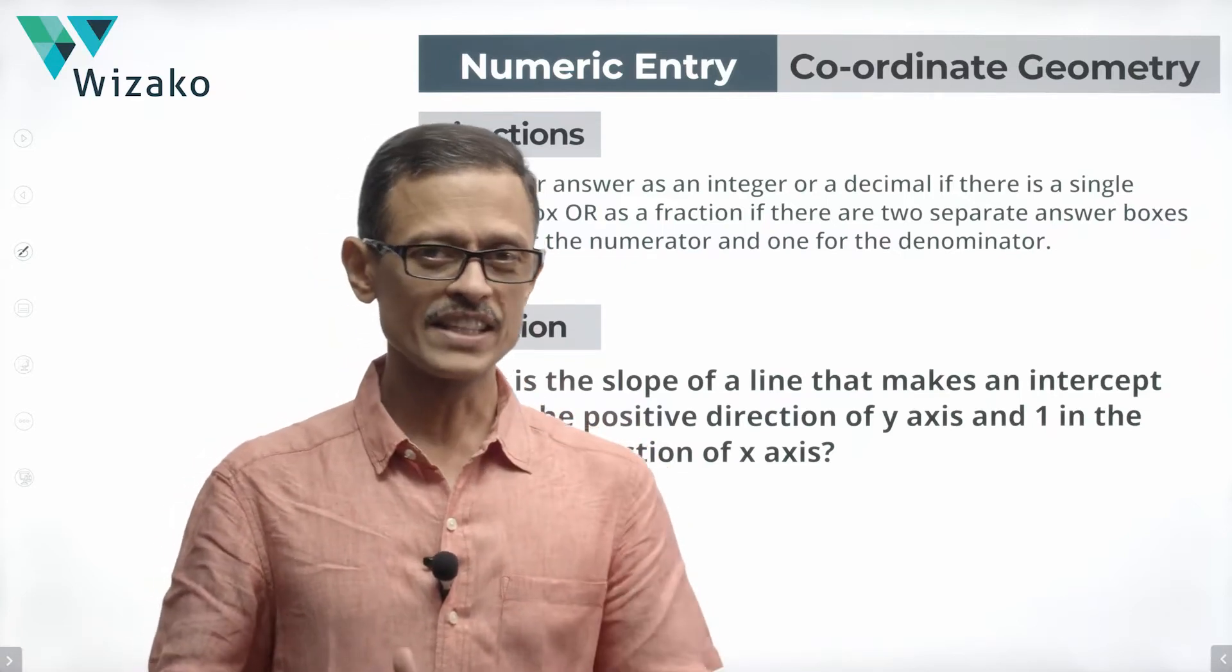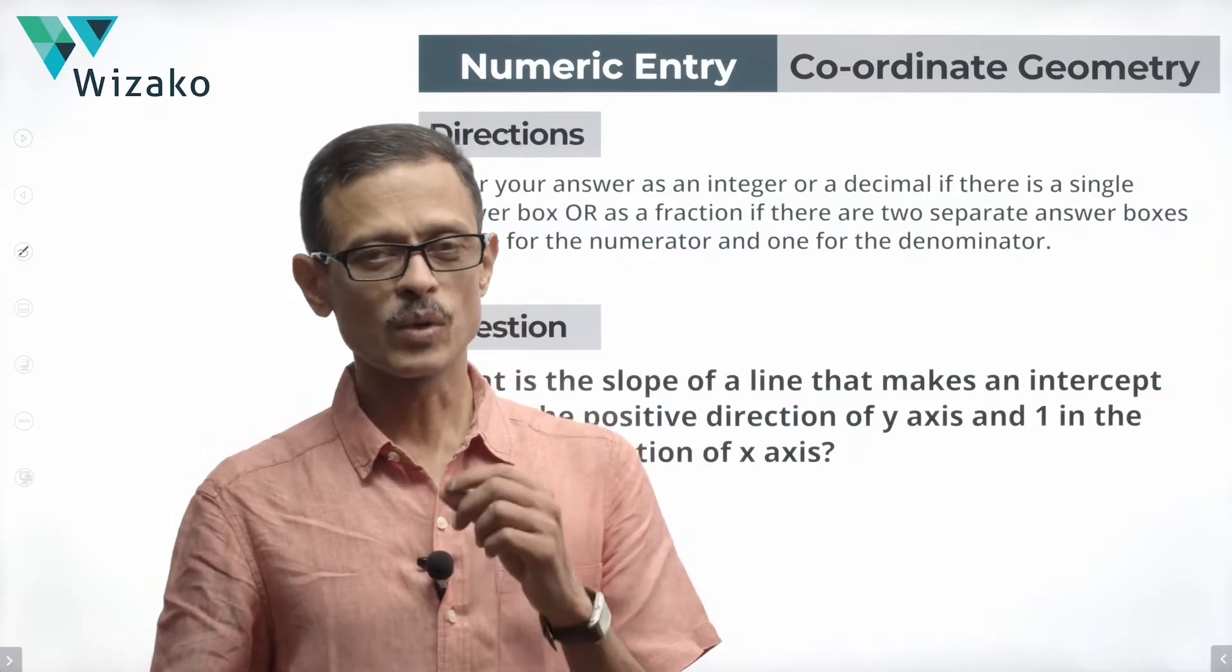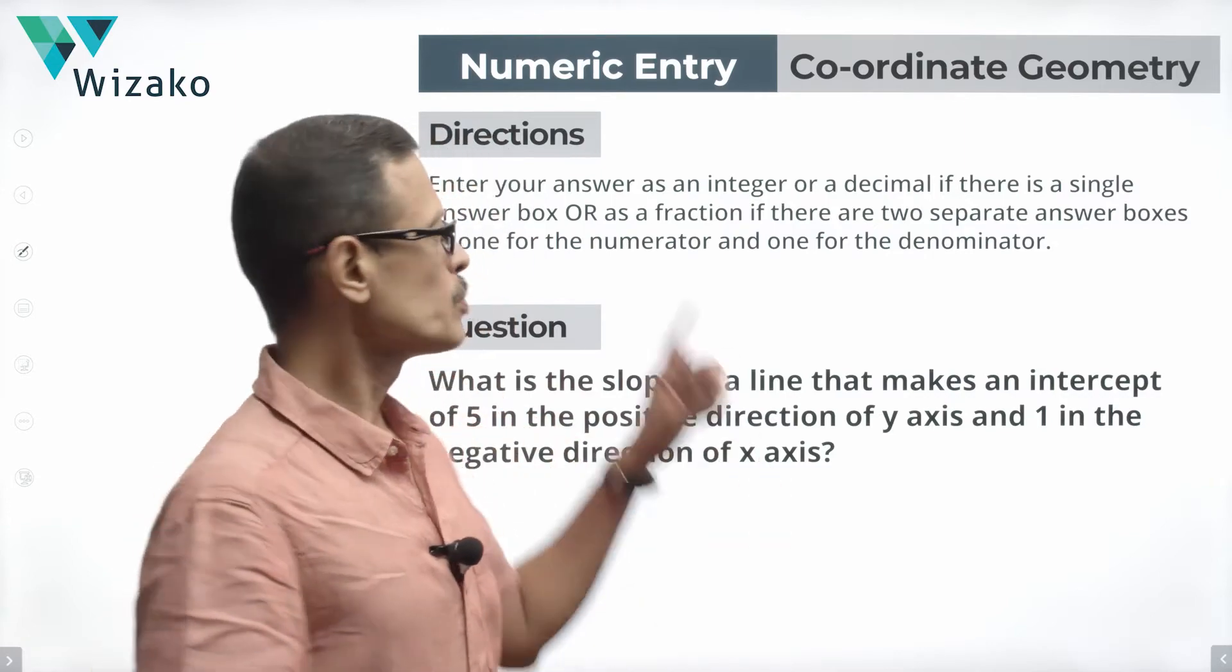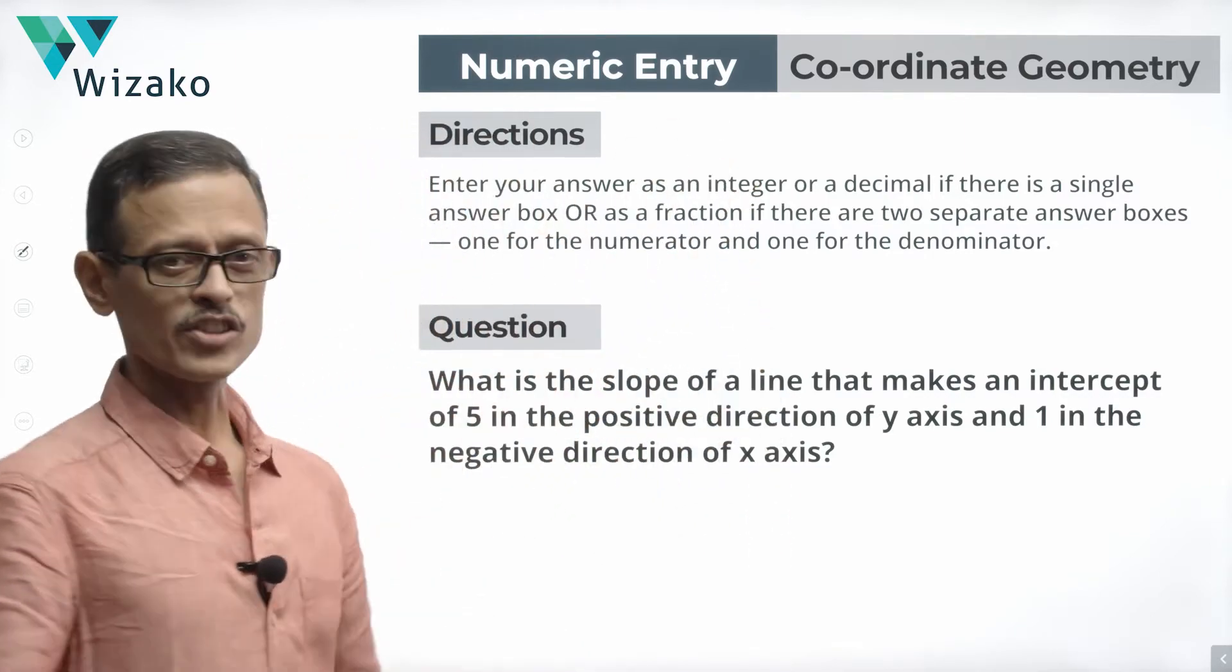Hi everyone, this one is a very easy question. This question is a GRE quantitative reasoning practice question, numeric entry type of question from the chapter coordinate geometry.